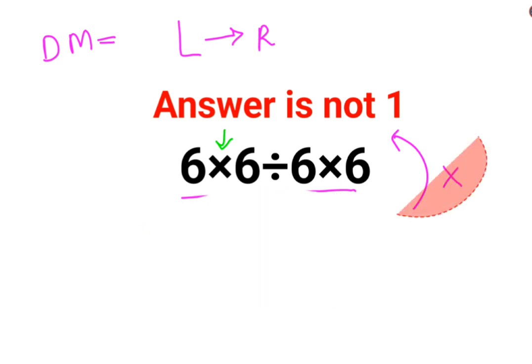So here we will do 6 multiplied by 6, that is 36, divided by 6 multiplied by 6.